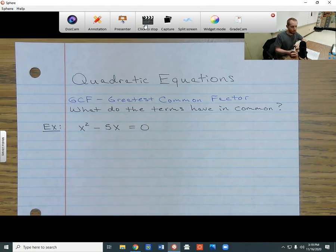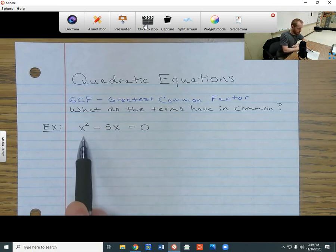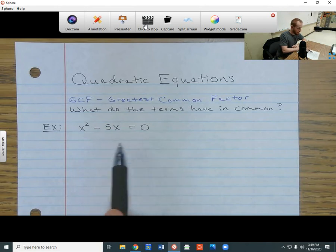They got to share something, right? And sometimes they do. So for example, if I have x² - 5x = 0, I know for a fact that these two terms both have an x.